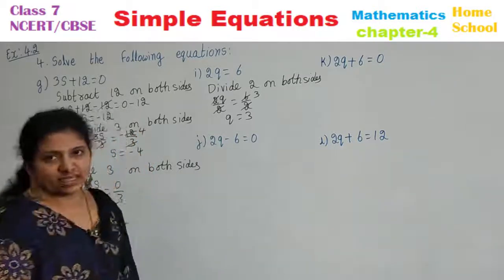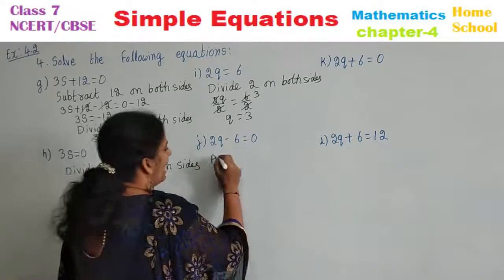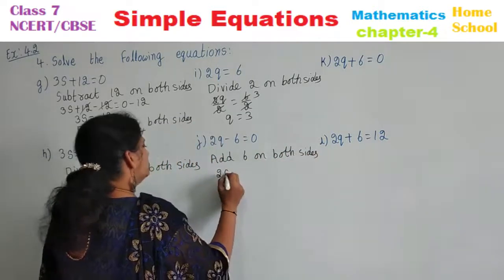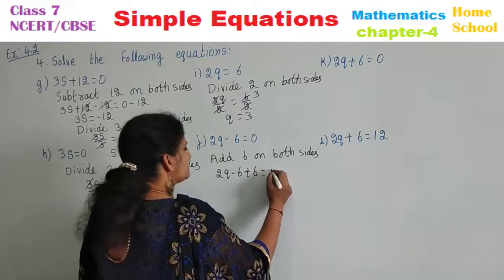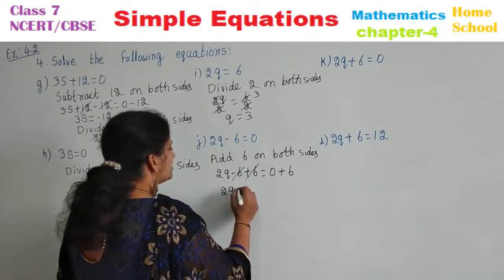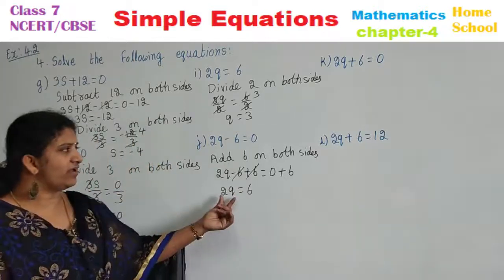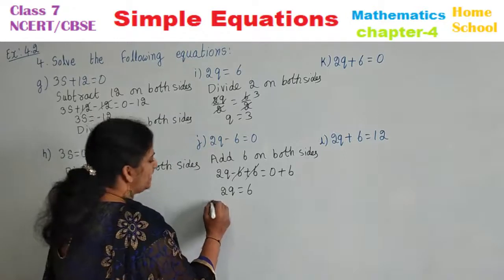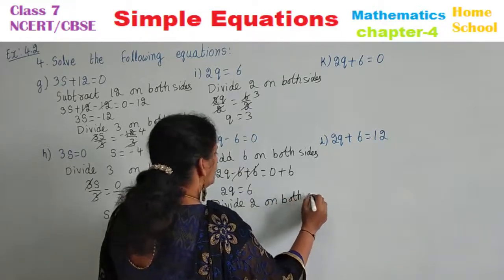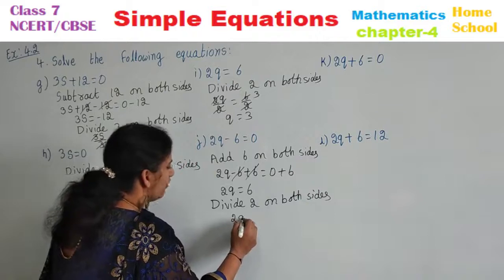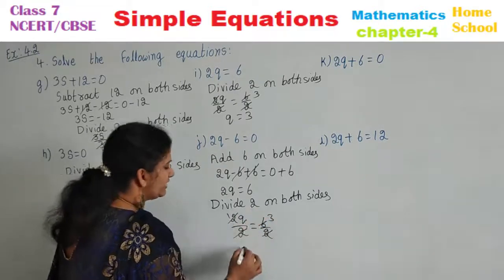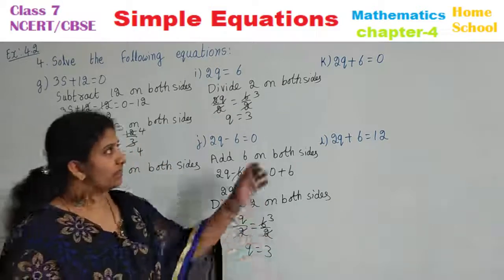Next sub-question: 2Q minus 6 is equal to 0. Minus 6 you can see — add 6 on both sides. 2Q minus 6 plus 6 is equal to 0 plus 6. Minus 6 plus 6 will be cancelled. 2Q is equal to 6. Again, other than variable, 2 is multiplied, so divide 2 on both sides. 2Q by 2 is equal to 6 by 2. 2 ones and 2 threes. Q is equal to 3 is your answer.